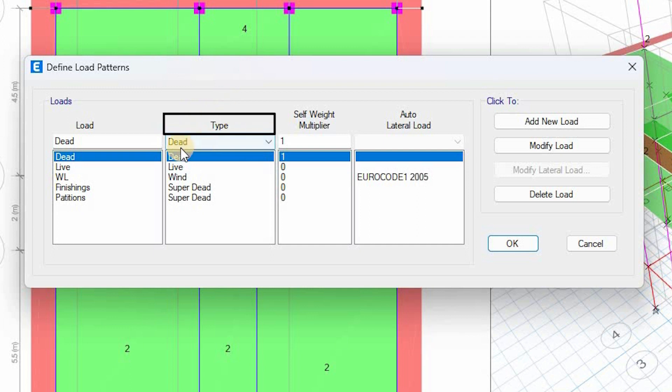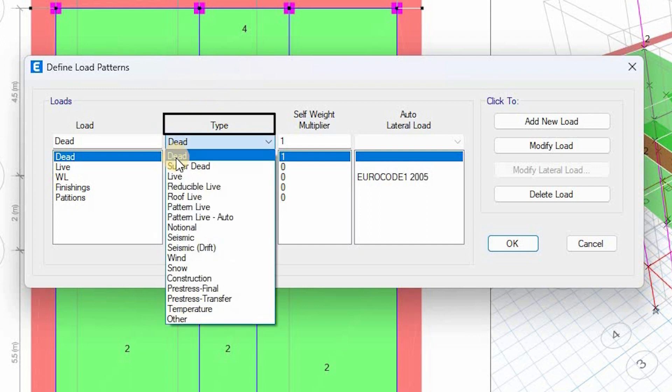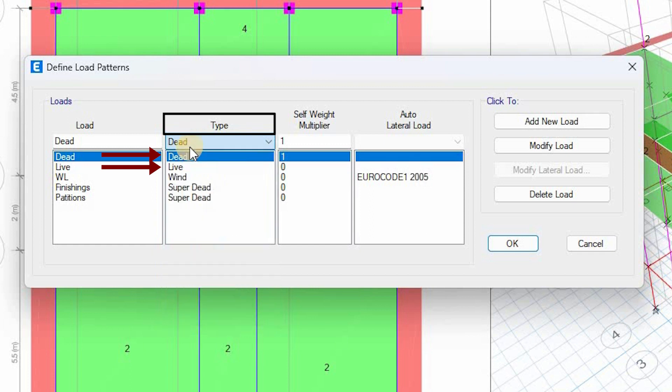That is the type of the load. Here you have the dead type and the super dead type. So you have these two classifications here, and in addition to this you have what we call the self-weight multiplier. Here you have one and you may have a zero. You have these two options.